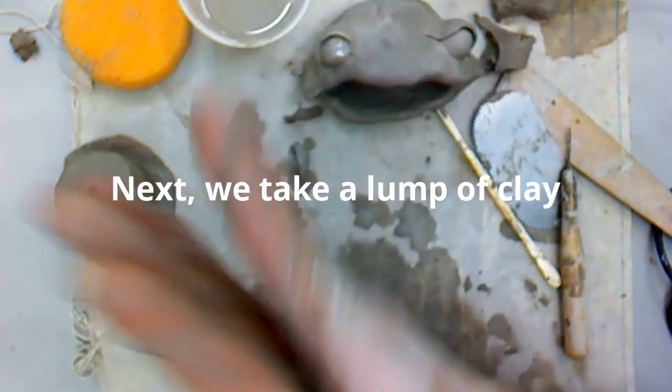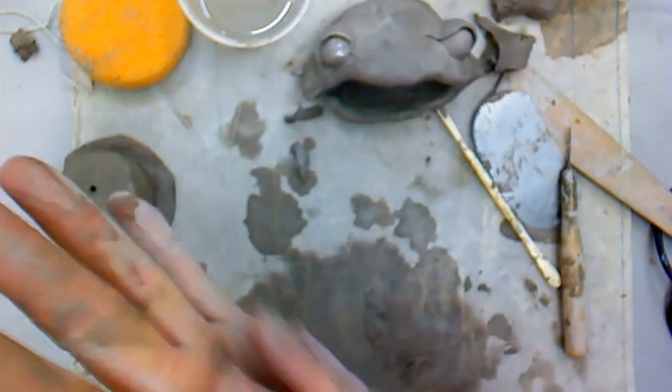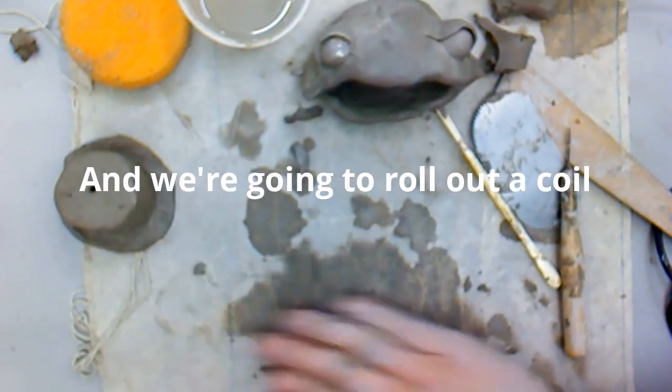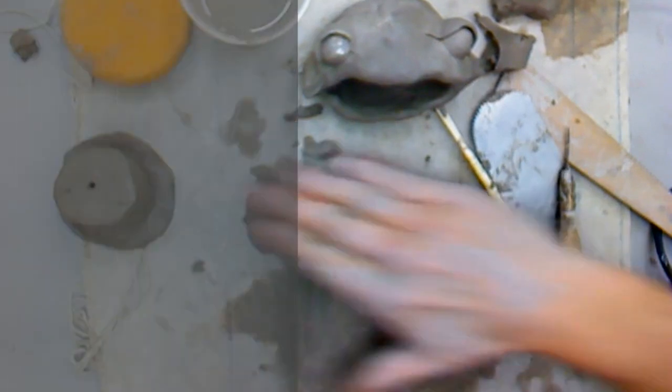Now we're going to take any lump of clay, doesn't have to be too big, and we're going to roll it out into a coil. That's going to be shaped like a worm or a long cylinder.